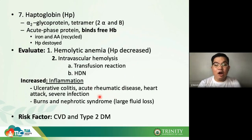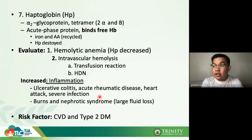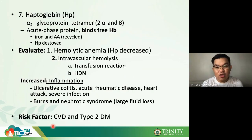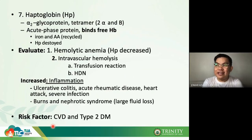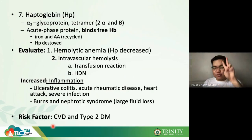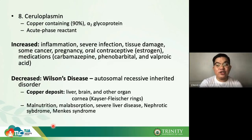Haptoglobin is increased in inflammation, ulcerative colitis, traumatic disease, heart attack, severe infection, burns, and nephrotic syndrome. It is also being used as a risk factor for cardiovascular disease and type 2 diabetes mellitus — similar to LDL as an indicator of atherosclerosis. In summary: haptoglobin is an alpha-2 globulin that carries free hemoglobin.